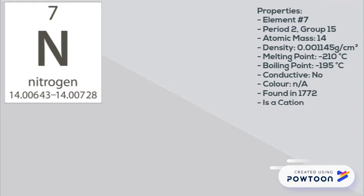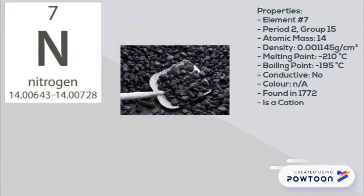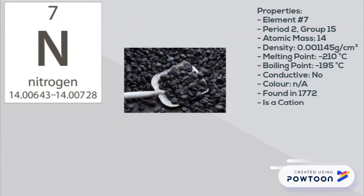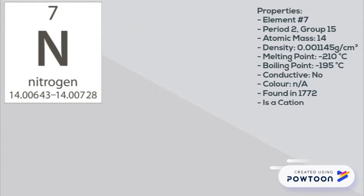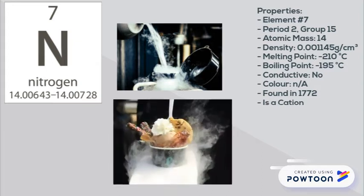Like hydrogen, nitrogen is also a colorless and odorless gas. It makes up 78% of the air we breathe and is found in coal and other fossil fuels. It also comes in liquid form as liquid nitrogen, which is really cold and can be used to make vaping ice cream.